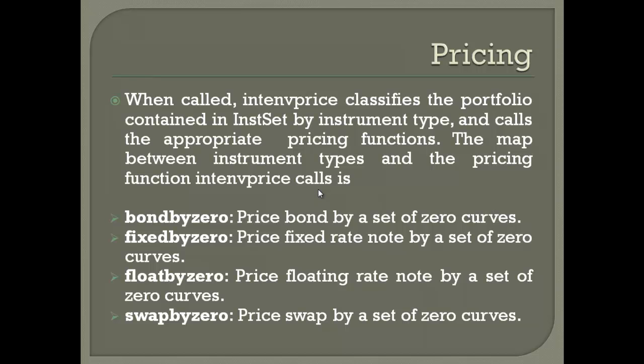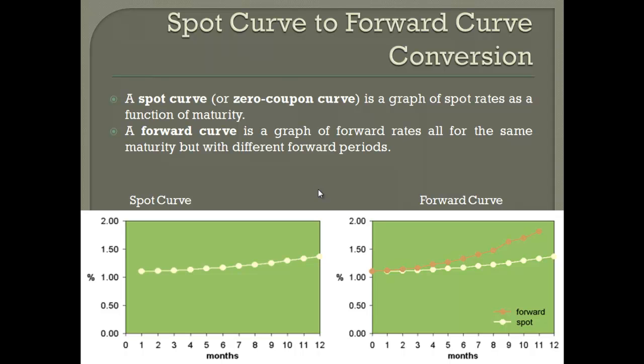Look at the four commands: 'pricebyzero', 'fixedbyzero', 'floatbyzero', and 'swapbyzero'. These allow you to price the same instrument whether you have the forward price, spot price, or any other price input — you can convert them and price a float, fixed, or swap using a set of zero curves. Zero curves are zero-coupon or spot curves.